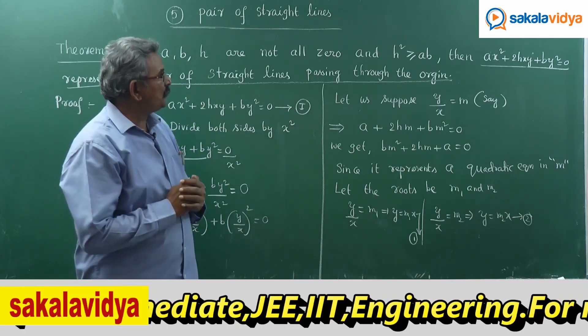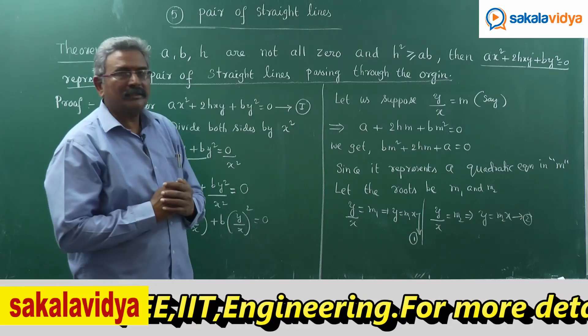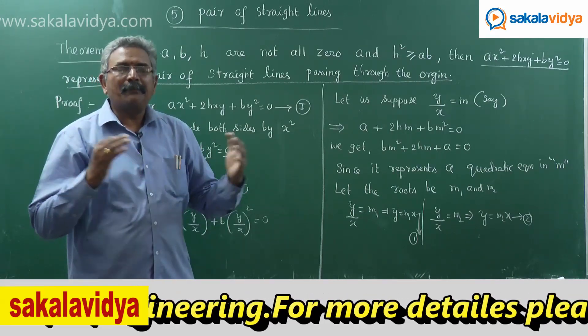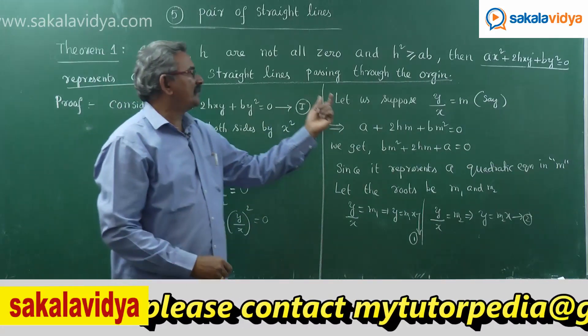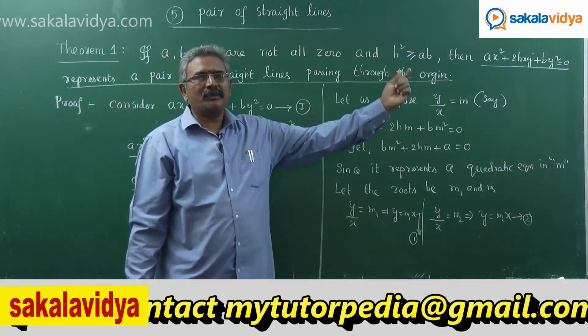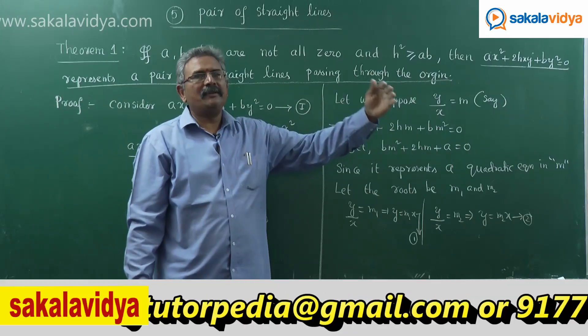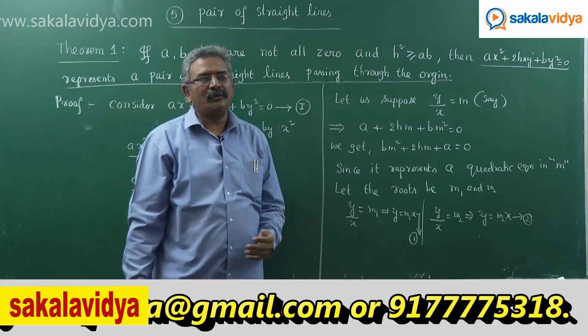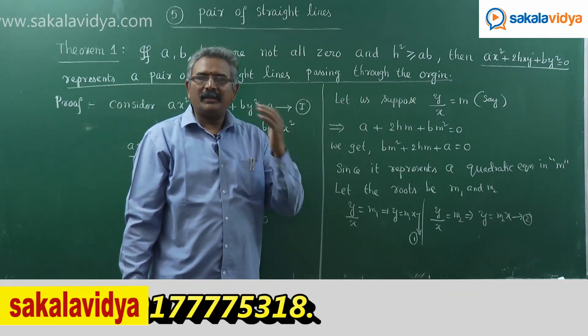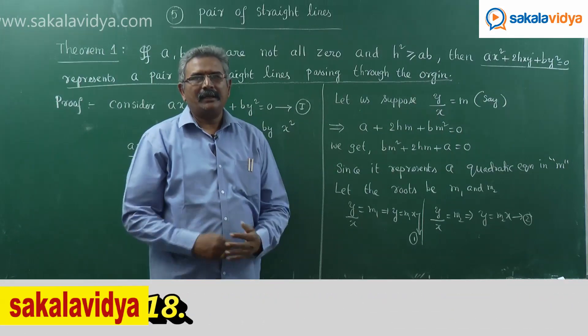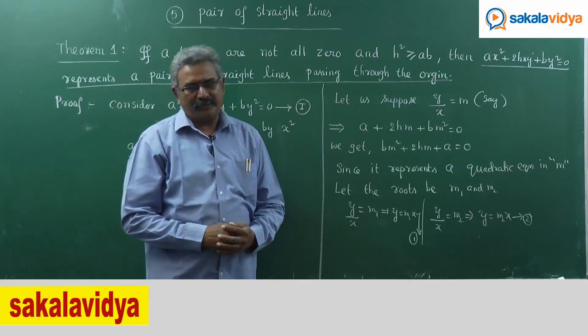Now let us discuss how to find the separate equations, or individual equations, of ax squared plus 2hxy plus by squared equals 0.